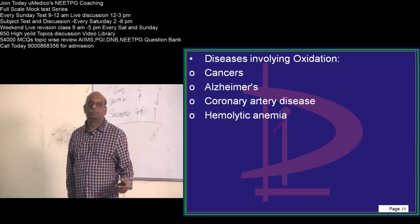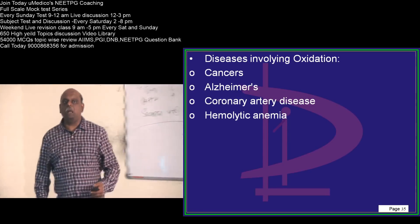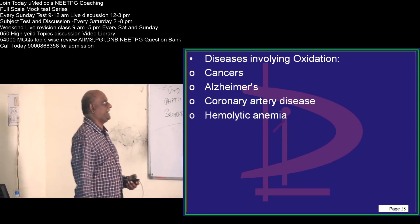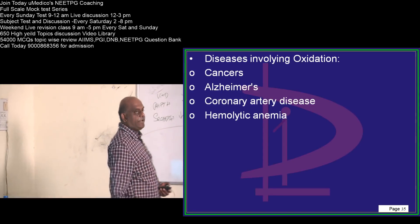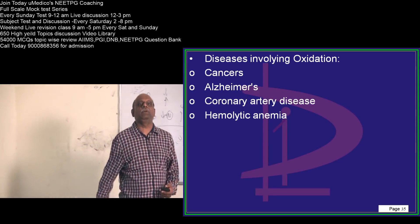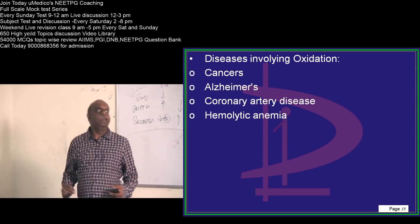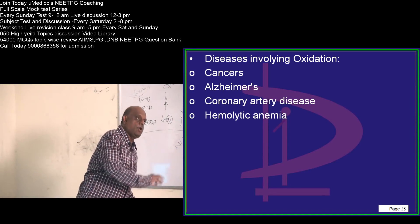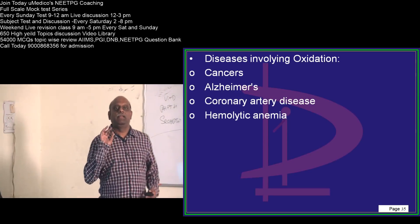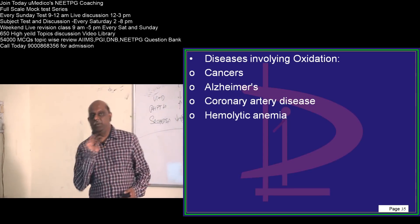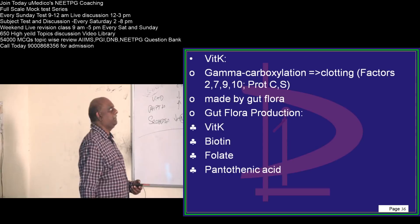What are the diseases caused by problems in oxidation? Cancers, alchemists, coronary artery disease, and hemolytic anemia. These are all the important oxidation-defect associated situations you need to basically remember.